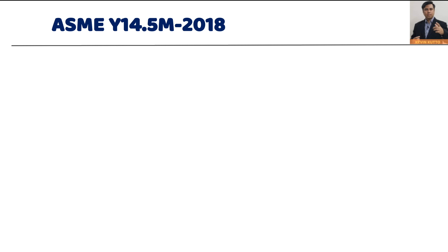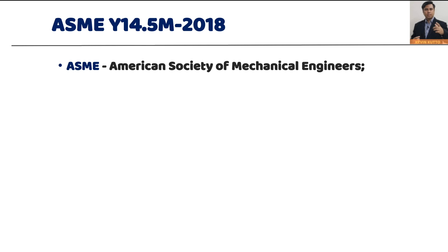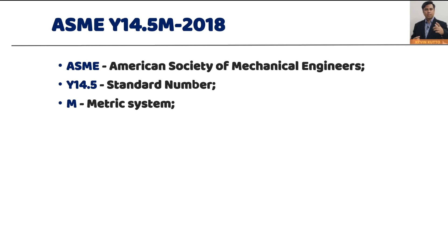So what are the standards used for GD&T? The first standard is ASME Y14.5M 2018. ASME stands for American Society for Mechanical Engineers, Y14.5 is the standard number, M is the metric system, and 2018 is the latest revision of this standard. But is this the only standard available for GD&T? No.